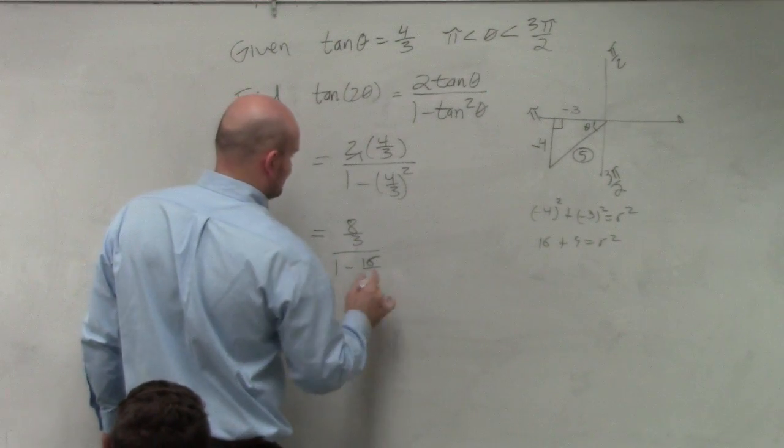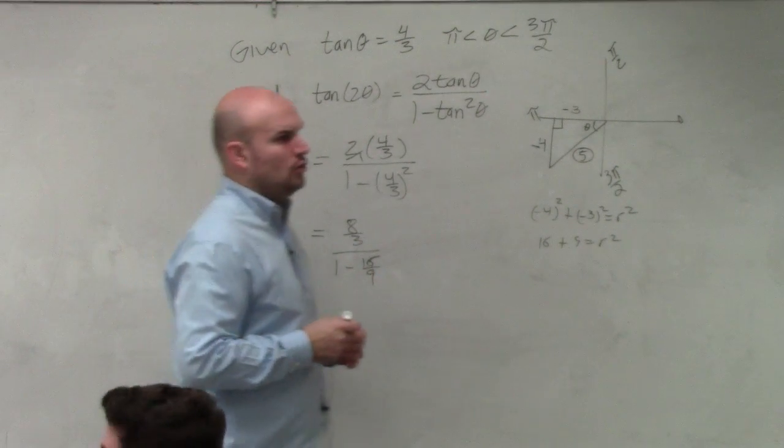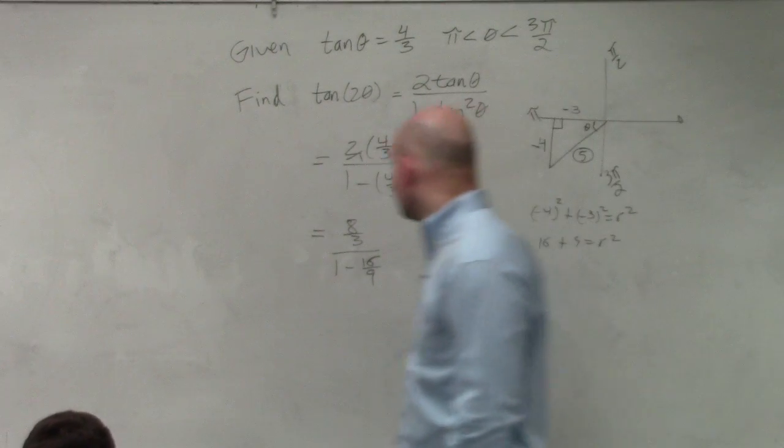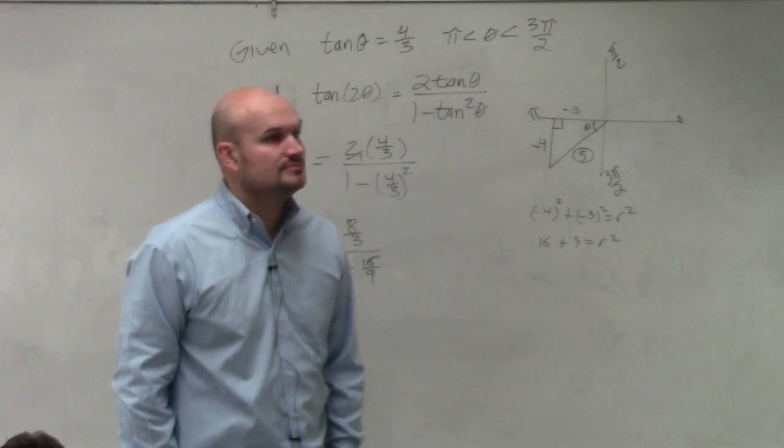So now I have 8/3 all over 1 minus 16/9. I'm sorry, 16/9. All right. Now, this usually comes to a point—16/9, I squared the 4/3.